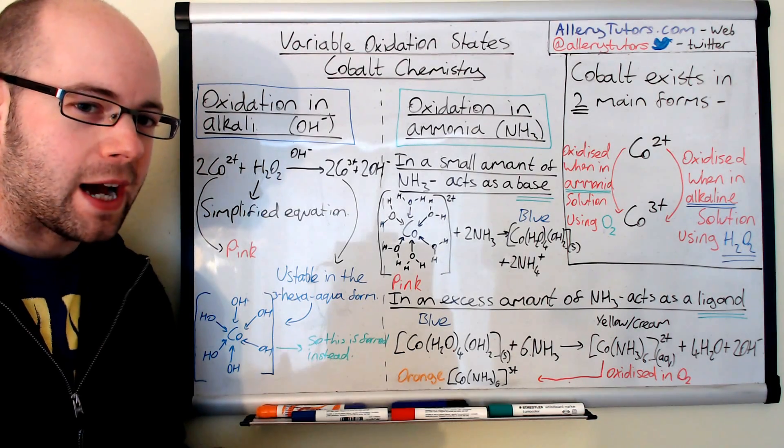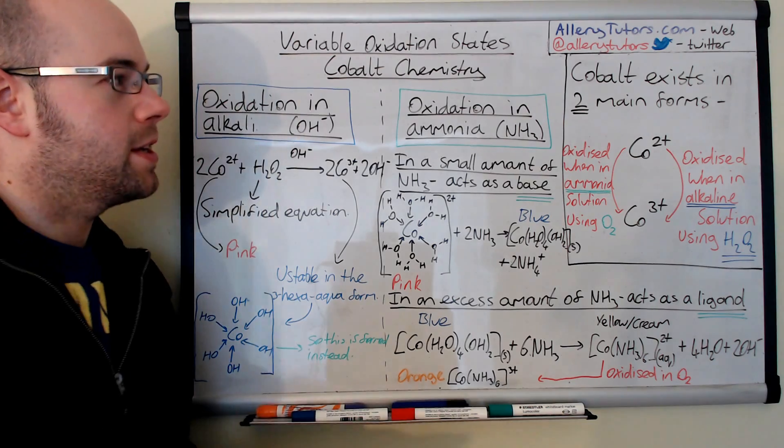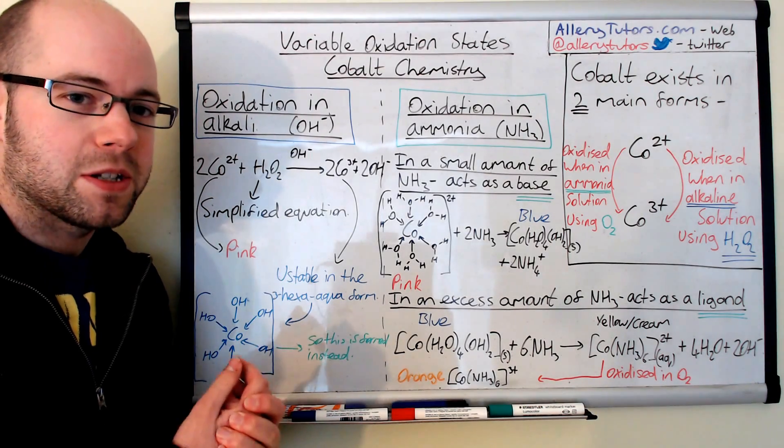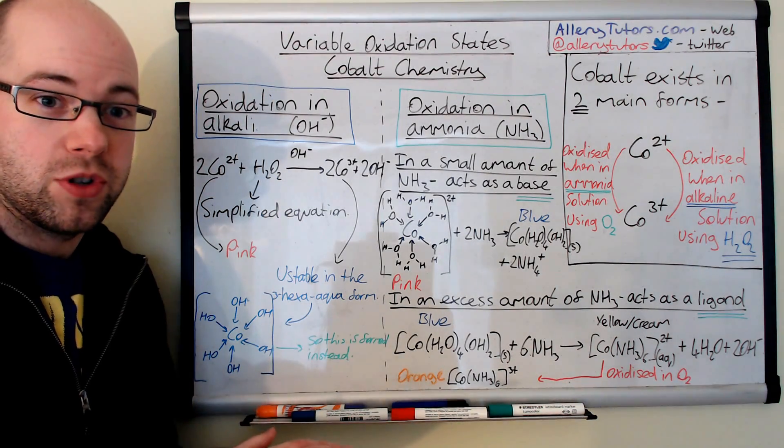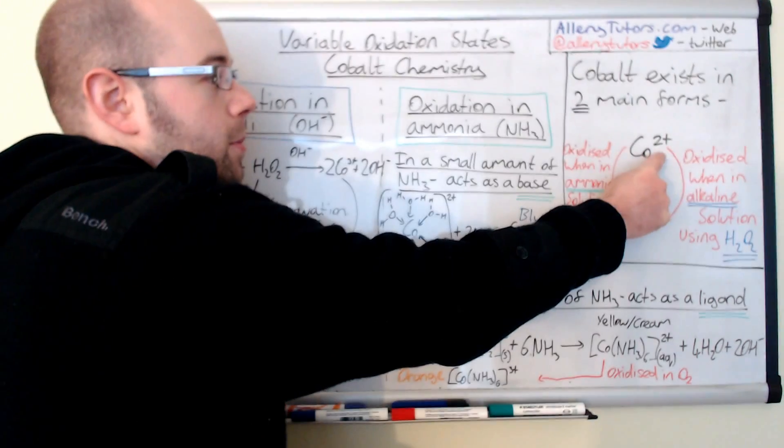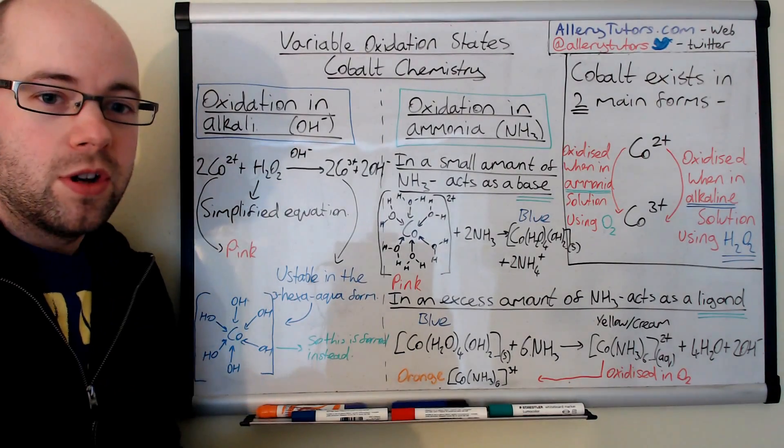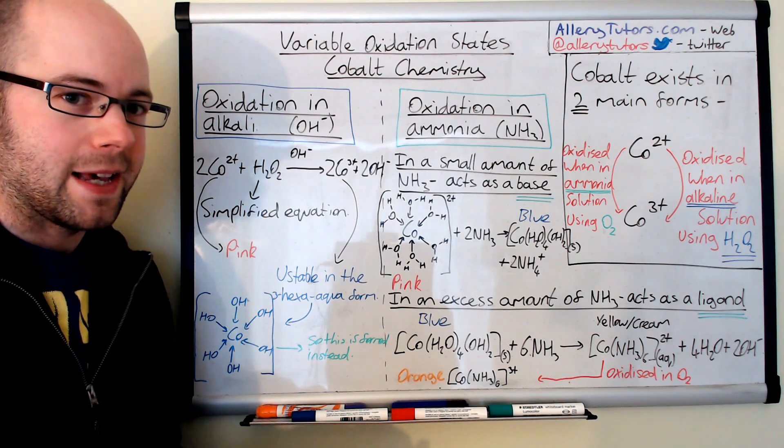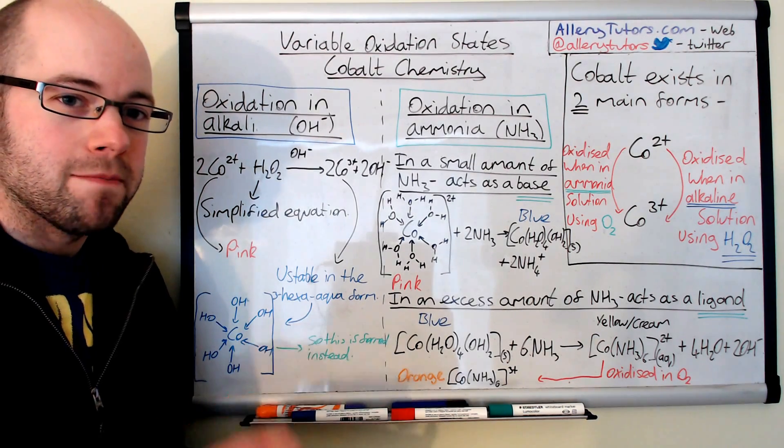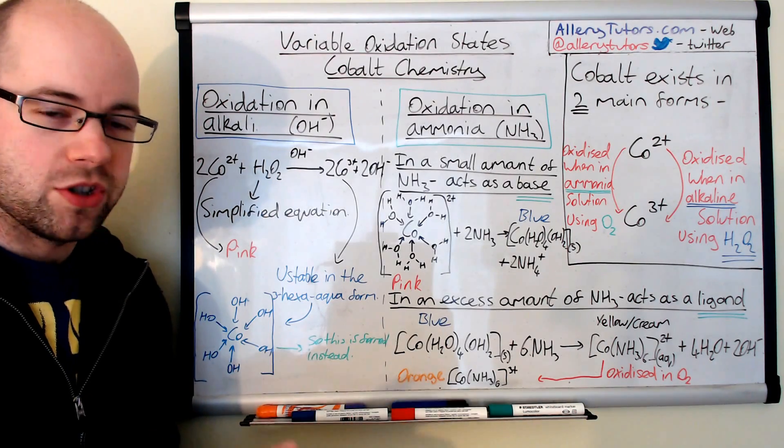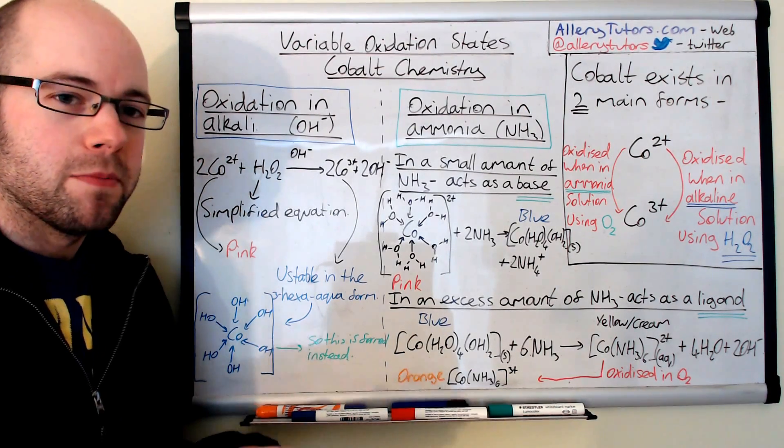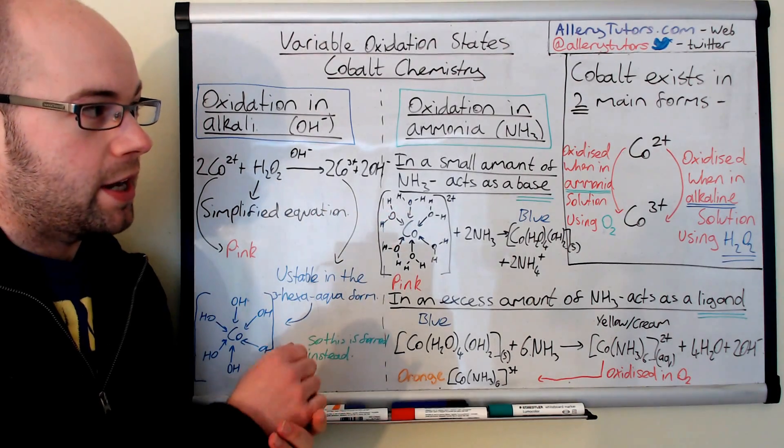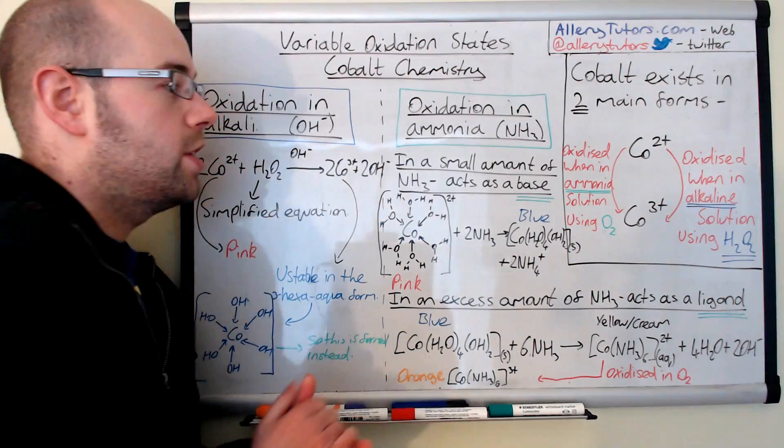So we're going to start by looking at the two main ions that we're looking at and this is cobalt 2 plus and cobalt 3 plus. Now, if we start with cobalt 2 plus, cobalt 2 plus can be oxidized in two different ways depending on what solution you dissolve it in. For example, when we oxidize cobalt 2 plus in alkaline solution, we can use something called hydrogen peroxide, which is a really powerful oxidizing agent and we can form cobalt 3 plus complexes then. We can also oxidize it when we dissolve it in ammonia and then we can even use oxygen just in the air to oxidize it because of the instability of the ammonia complex that we form. So we're going to start just by looking at oxidizing them using an alkaline solution using hydrogen peroxide.